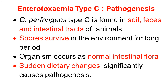Clostridium perfringens type C is found in soils, feces, and the intestinal tract of animals. Infection occurs and spores survive in the environment for a long period. The organism also occurs as a normal intestinal flora, but the predisposing factor is that sudden dietary changes cause an imbalance in the microflora of the GI tract.